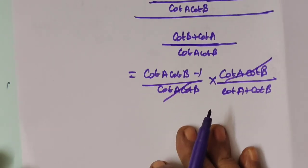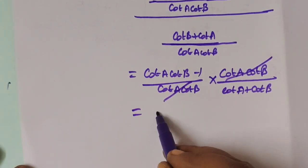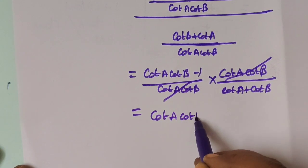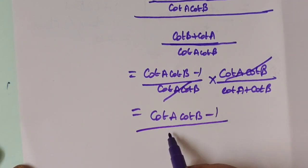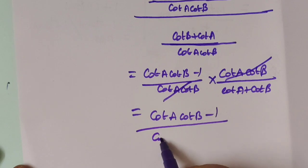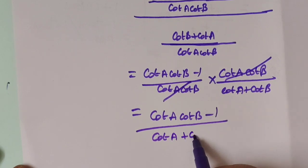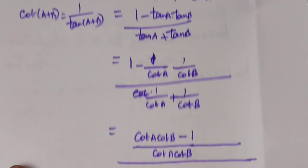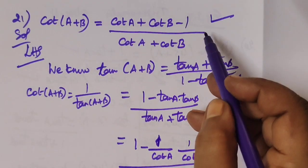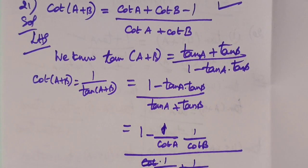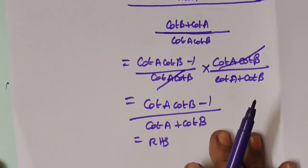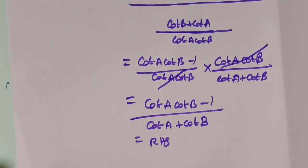This is the entire result. Cancel and simplify: equal to (cot a · cot b - 1) / (cot a + cot b). So that equals what we wanted to prove. Thank you.